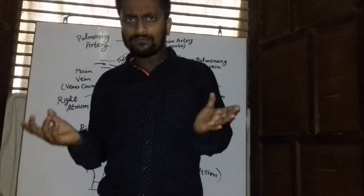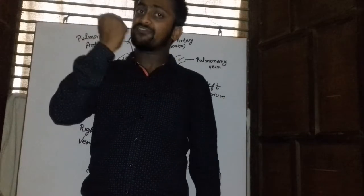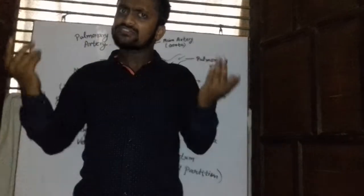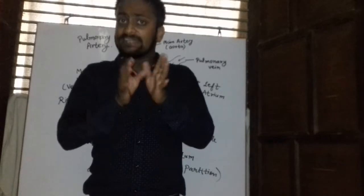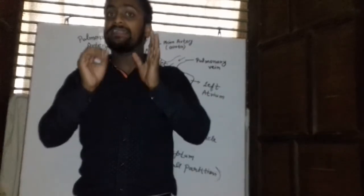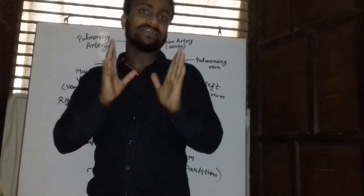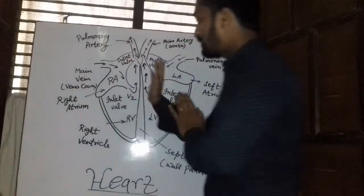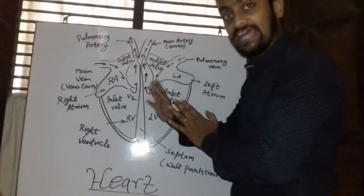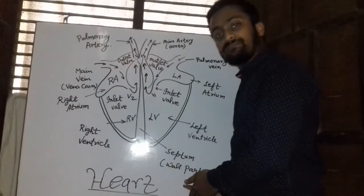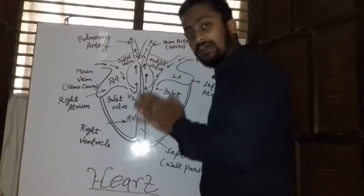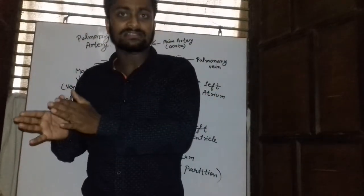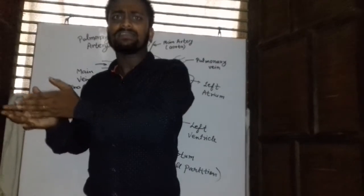What is the shape of the heart? This heart is roughly triangular in shape. Now we will be dealing with the structure of the heart. The heart is a muscular organ and it is protected by a double-layered membrane called the pericardium. Our heart is divided into the left part and the right part with the help of a partition called the septum. This septum is the wall partition. The right side of the heart is called the right heart, while the left side is referred to as the left heart.